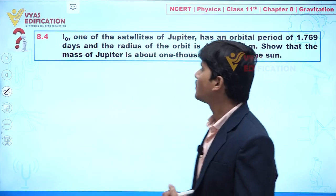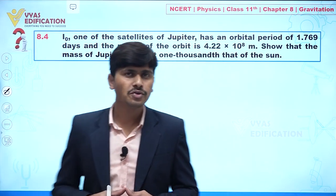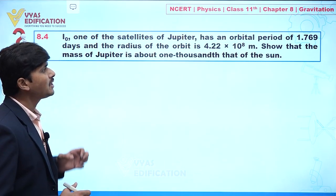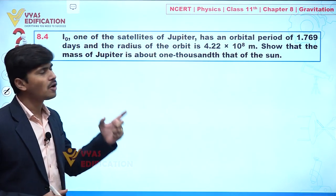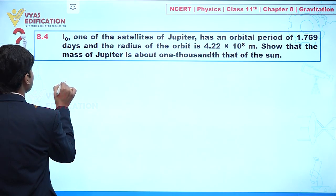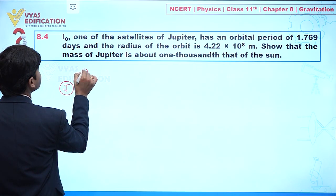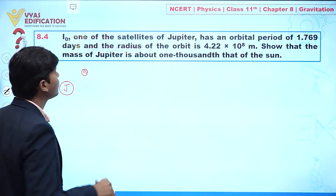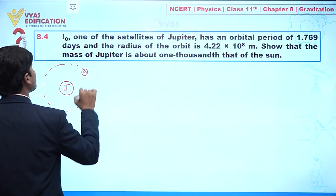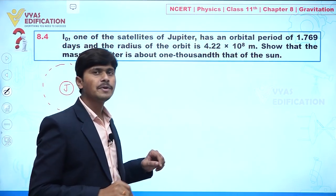We are going to discuss question number 8.4. In this question, one of the satellites of Jupiter is given with an orbital period and radius of orbit. Let's suppose this is Jupiter and this is one of its satellites, revolving around Jupiter.